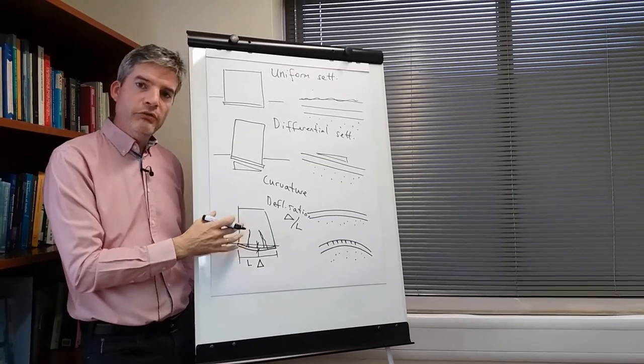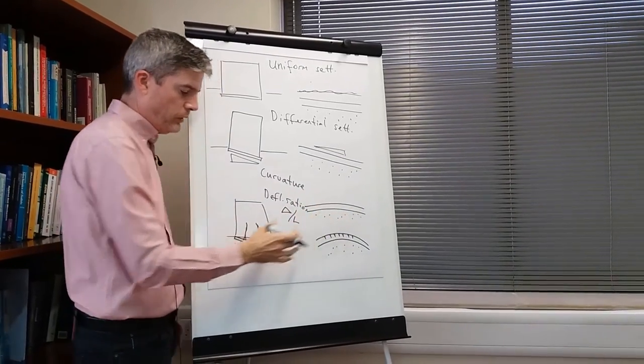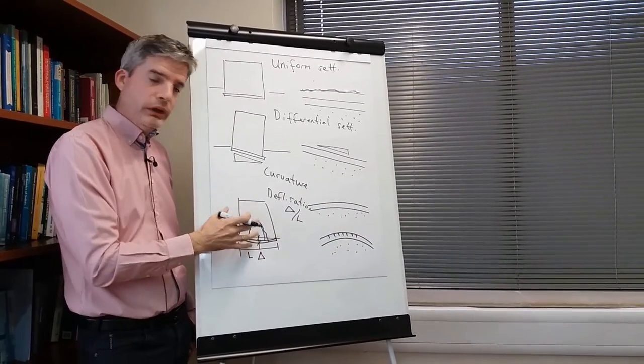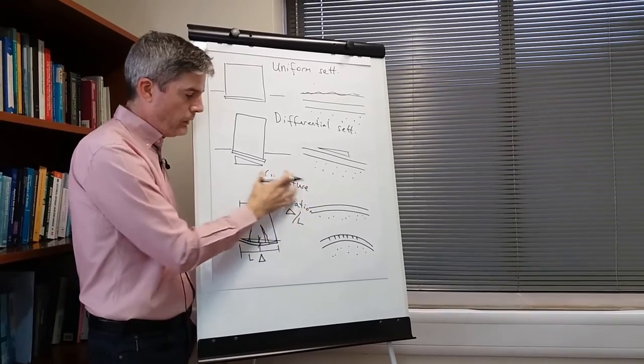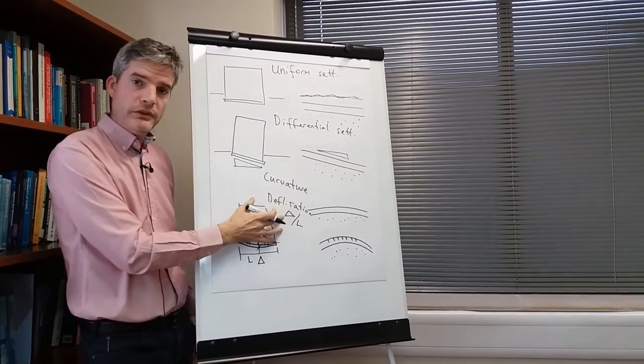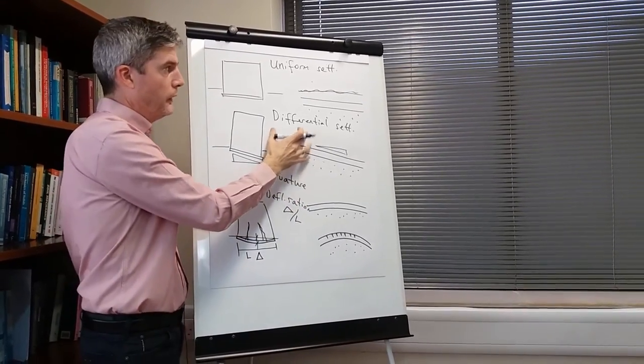That is one way to express the curvature or the amount that the slope is changing. So if you want to avoid damage to a pavement or a building, you really need to focus on this measurement of the settlement rather than the others.